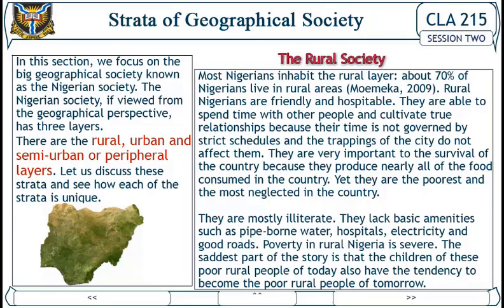Rural people are very important to the survival of the country because they produce nearly all the food consumed in the country. Yet they are the poorest and most neglected. They are mostly illiterate and lack basic amenities such as pipe-borne water, hospitals, electricity, and good roads. Poverty in rural Nigeria is severe.